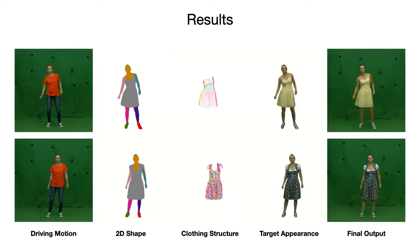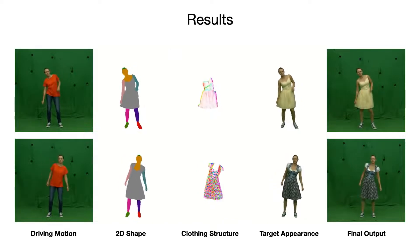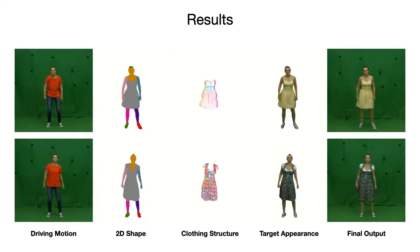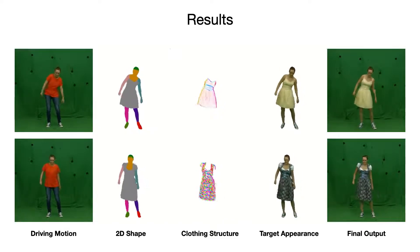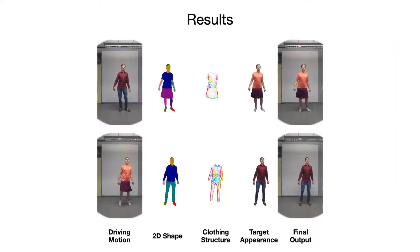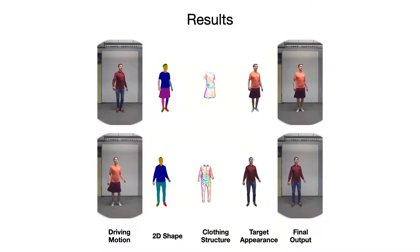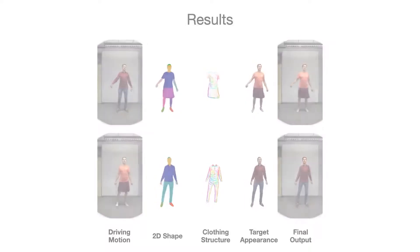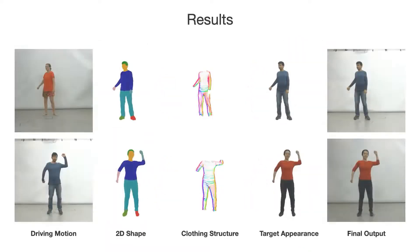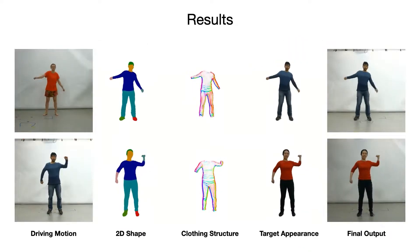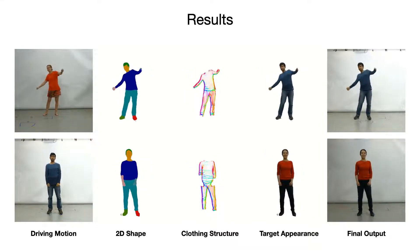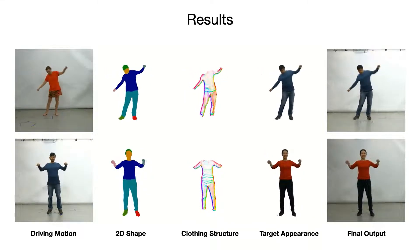Here we show results for several reenactment scenarios. Note how our framework produces temporally coherent representations of 2D shape and clothing structure, which result in realistic swinging of the actress's dress, and preserve high-frequency details in the rendered wrinkles and textures. Our method is able to transfer motion between subjects of different build and gender, while keeping the original target identity.